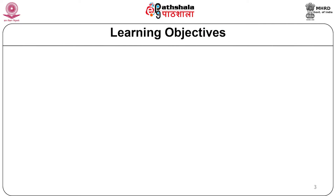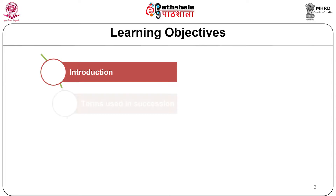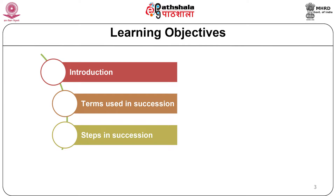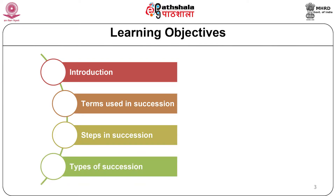Succession is generally initiated by a significant disturbance in that particular area. The learning objectives of this module are: understanding succession, terms used in ecological succession that is the pioneer succession and climax succession, steps of succession, major types or patterns of succession including primary succession and secondary succession, autogenic succession and allogenic succession, and progressive succession, retrogressive succession, directional succession and cyclic succession.